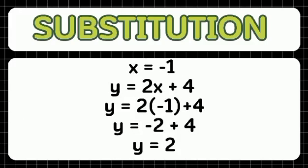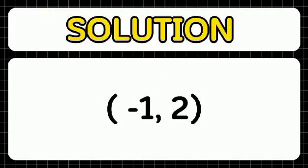Since we already find the value of x, we will find the value of y by using y equals 2x plus 4. So the answer is y equals 2. So our solution in this system of equation will be negative 1 and 2.